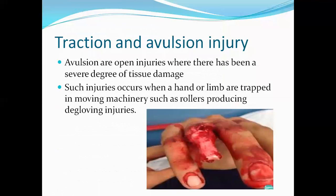Traction and avulsion injuries are open injuries with a severe degree of tissue damage. These are usually caused when hands or limbs are trapped in moving machinery such as rollers, and are typically encountered in factory settings, producing a degloving injury.